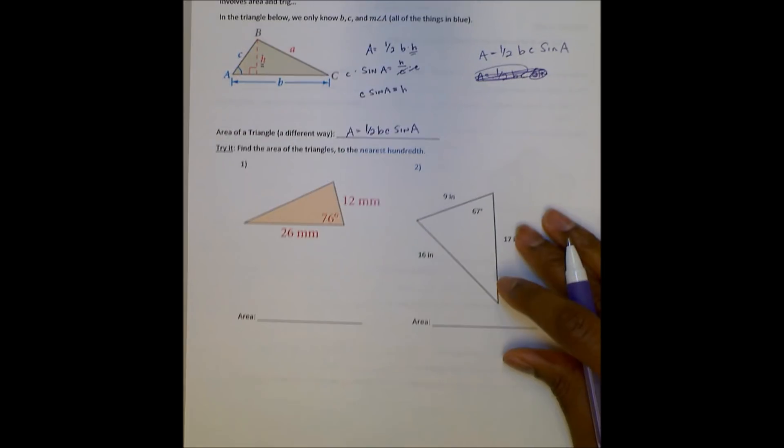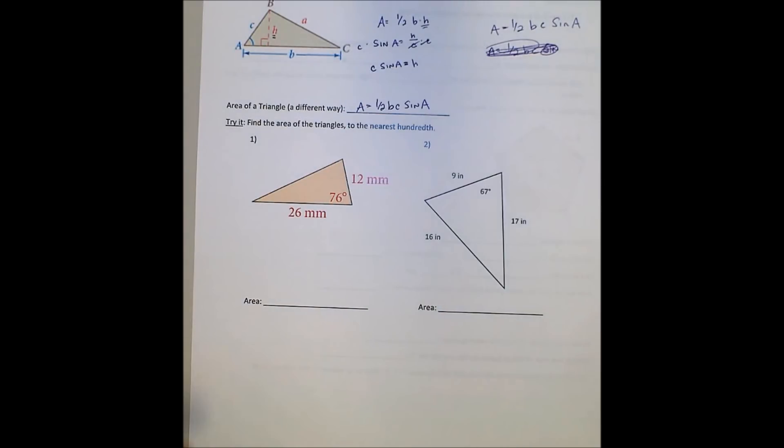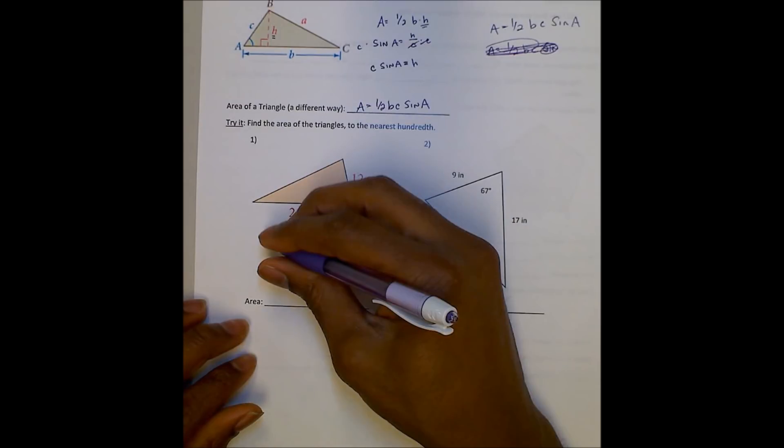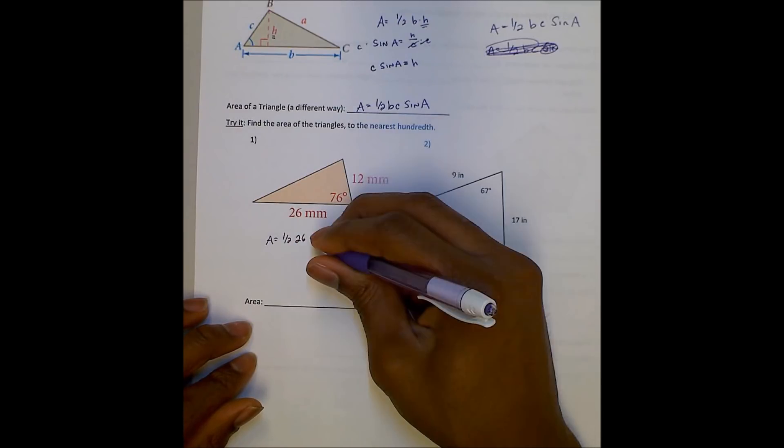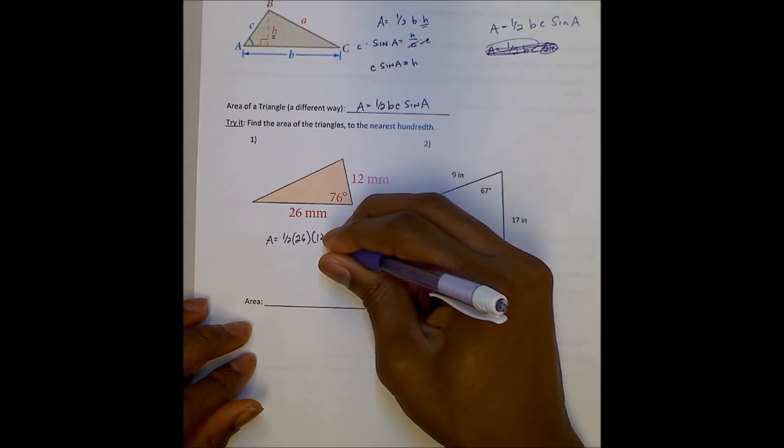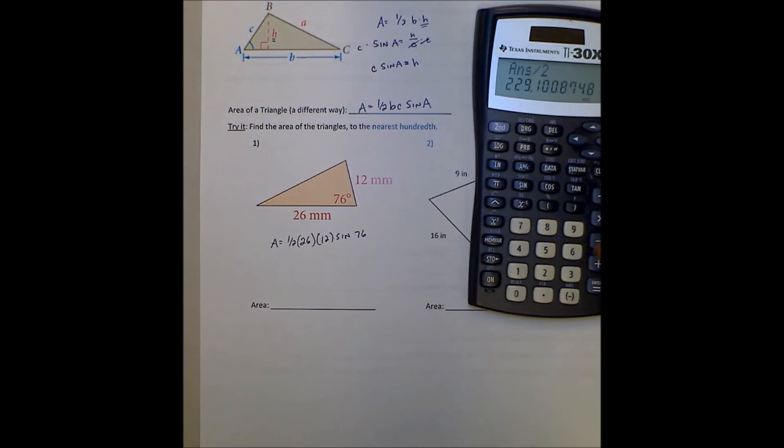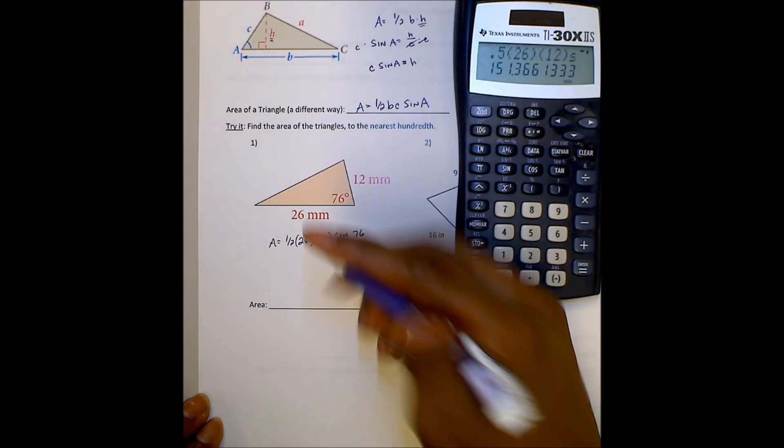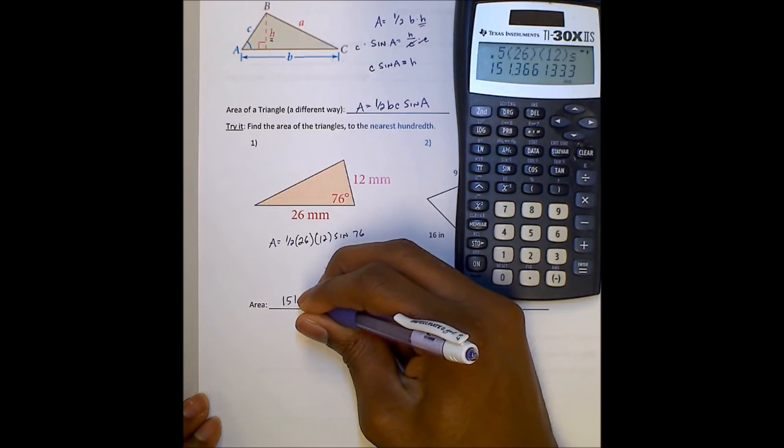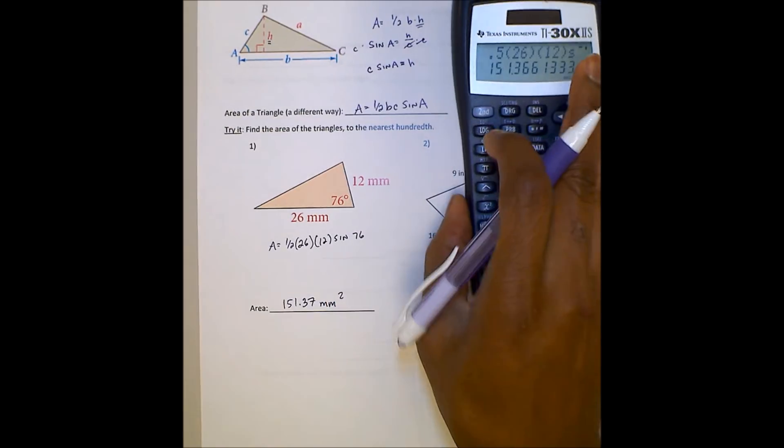So let's put that into practice here. If I wanted to find the area of this triangle, see, I would have to find the height. We could do that and do all the trig stuff. But the shortcut, or the different way to do that, is we could say, okay, area equals 1 half, our base, our base, which would be 26, times our other side, which is 12 sine 76. And I can put all that into the calculator at one time, 1 half, 26, times 12, times sine 76. And I can see the area of this triangle is going to be 151 point, we'll just say 37 to the nearest hundredth millimeter squared.